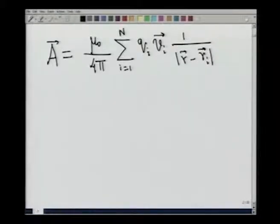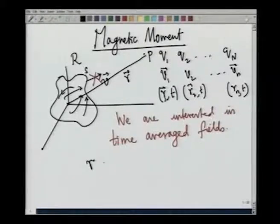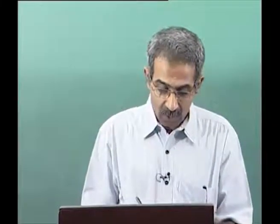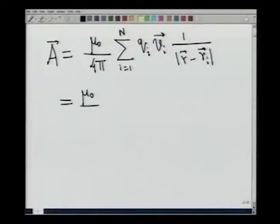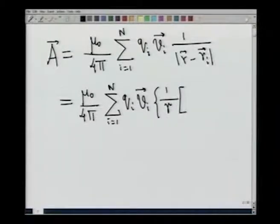We are interested in the field far away from the configuration. We choose a point P and note that r must be much, much greater than ri at all times t. The point r is fixed — that is where we place our detector to measure the magnetic field. Under this approximation, r ≫ ri, we make a binomial expansion. The result is a simple expression: μ₀/4π times Σ qi vi, with a factor of (1/r) pulled out, times [1 + r·ri / r²].